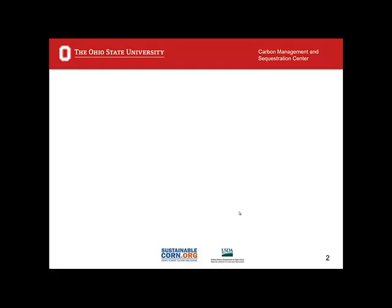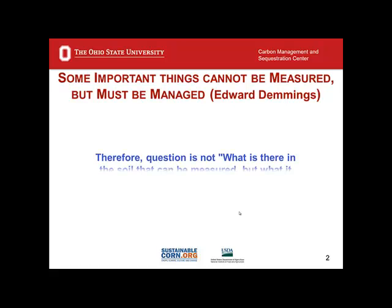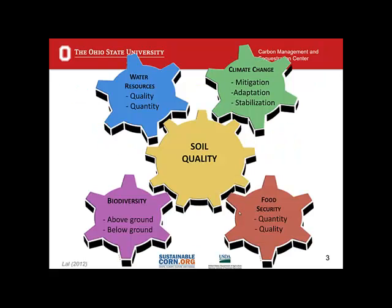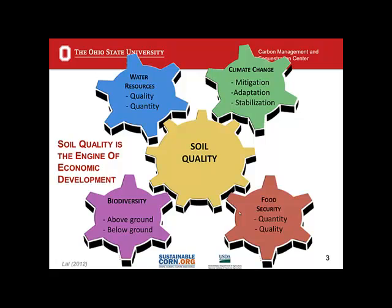Soil quality — perhaps go back to the concept that Edward Demings put out: that some important things cannot be measured but must be managed. In this context, the question is not what is there in the soil that can be measured, but what it does, which must be quantified. And what it does is soil quality — the soil functions and the soil capacity to do ecosystem services. Soil quality impacts water resources, climate change mitigation, food security, biodiversity, and it is the driving mechanism and engine of economic development in relation to agricultural production.